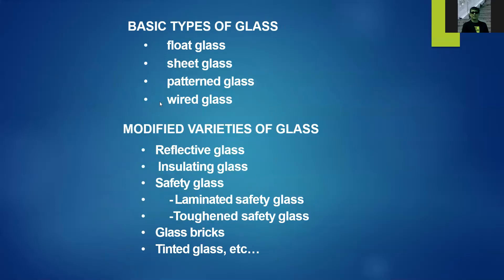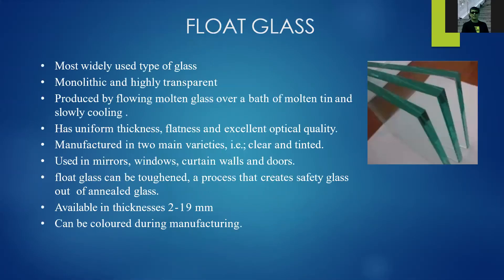The basic types of glass include float glass, sheet glass, patterned glass, and wired glass. There are also modified varieties such as reflective glass, insulating glass, safety glass, laminated safety glass, toughened safety glass, glass bricks, and tinted glass. Float glass is the most widely used type — it is monolithic and highly transparent, produced by flowing molten glass over a bath of molten tin and slowly cooling. It has uniform thickness, flatness, and excellent optical quality, available in thicknesses from 2 to 19 millimeters.